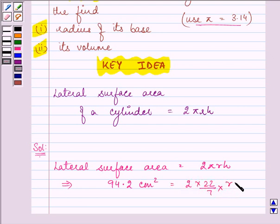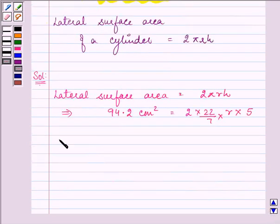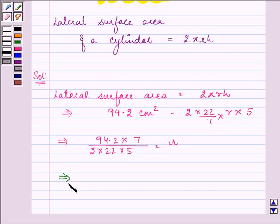We do not know the value of r, and h is 5 cm. So this implies 94.2 × 7 divided by 2 × 22 × 5 equals r, which gives us 3 cm.